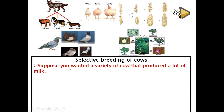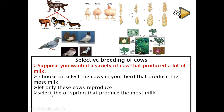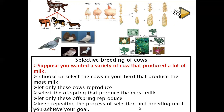Here is the process: suppose you want a variety of cow that can produce a lot of milk. You choose or select the cow in your herd that produces the most milk — looking for the cow with the characteristic you want. You let these cows reproduce and mate, then select the offspring that produce the most milk. Keep those offspring that produce more milk, and repeat the process of selection and breeding, keeping only those that can produce milk, until the genes become pure and you achieve your goal.